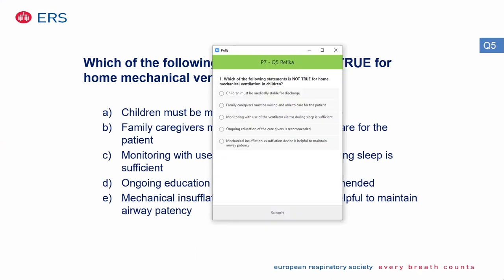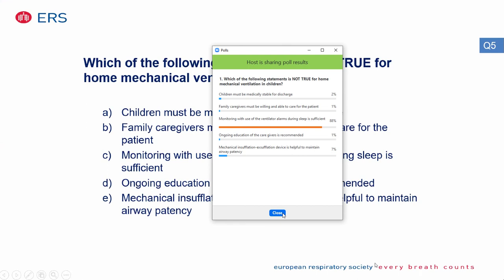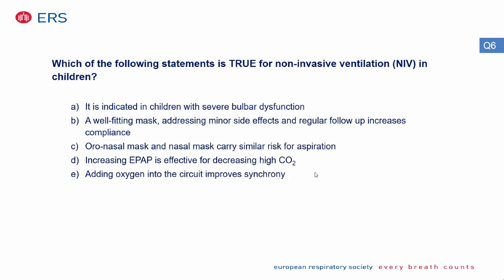Quiz: Which of the following statements is NOT true for home mechanical ventilation in children? Children must be medically stable for discharge; family caregivers must be willing and able to care for the patient; monitoring with use of ventilator alarms during sleep is sufficient; ongoing education of caregivers is recommended; or mechanical insufflation-exsufflation device (cough assist) is helpful to maintain airway patency. The correct answer is that monitoring with ventilator alarms during sleep is sufficient — we need to monitor these children with pulse oximetry, especially when sleeping and not monitored by a person.